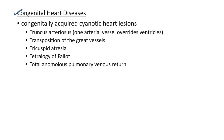Now let us discuss about congenital heart diseases. The various cyanotic heart lesions can be remembered by the mnemonic one-two-three-four-five: one is truncus arteriosus (one arterial vessel overrides ventricles), two is transposition of the great vessels (two arteries are switched), three is tricuspid atresia, four is tetralogy of Fallot, five is total anomalous pulmonary venous return (five words).